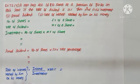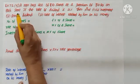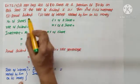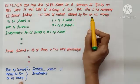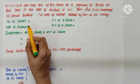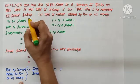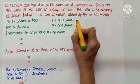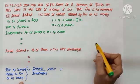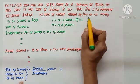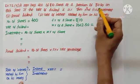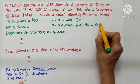Question number 5. A man buys 400 Rs. 10 shares at a premium of Rs. 2.50 on each share. If the rate of dividend is 12%, find his investment, annual dividend, and rate of interest received by him on his money. Number of shares given is 400. Face value of Rs. 10 shares is Rs. 10. At a premium of Rs. 2.50 — premium tells us to add with face value — so face value 10 plus premium 2.50 gives market value Rs. 12.50.